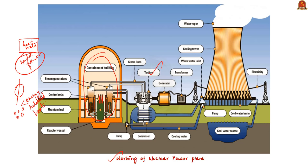This fission takes place inside the reactor core, which contains uranium fuel. The heat produced during nuclear fission is used to boil water into steam, which turns the blades of a steam turbine. As the turbine blades turn, they drive generators that make electricity. There is a separate structure called a cooling tower where steam is cooled back into water, and this cooled water is reused to produce steam.